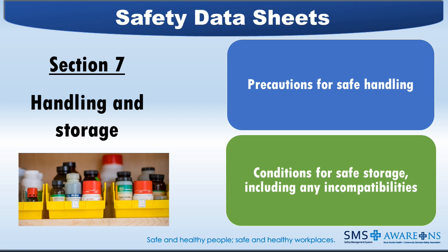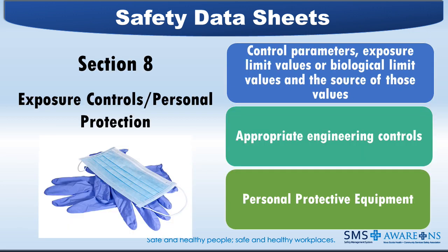Section 7 — Handling and Storage provides guidance on safe handling practices that minimize the potential hazards to people, property, and the environment from the substance or mixture, and emphasizes precautions related to the intended use and to the unique properties of the substance or mixture. Requirements consist of precautions for safe handling and conditions for safe storage, including incompatible materials. Section 8 — Exposure Controls and Personal Protection provides occupational exposure limits and exposure control measures, including engineering control measures that are needed to minimize exposure and risks associated with the hazard of the substance or mixture. Requirements consist of control parameters including occupational exposure limit values or biological limit values, the source of those values, and appropriate engineering controls.